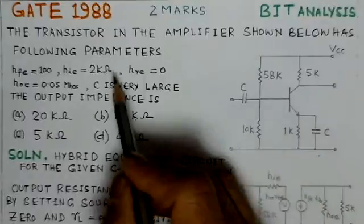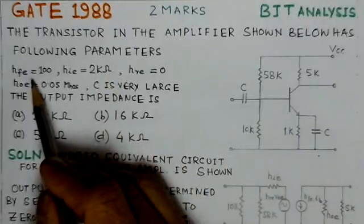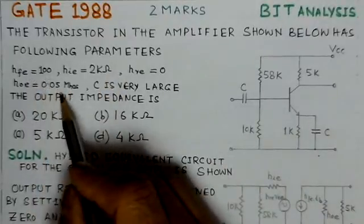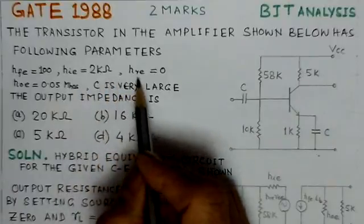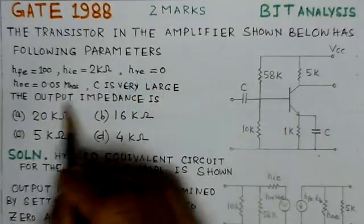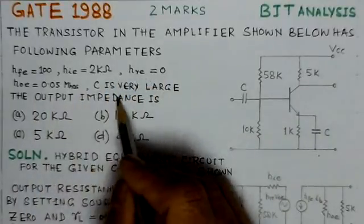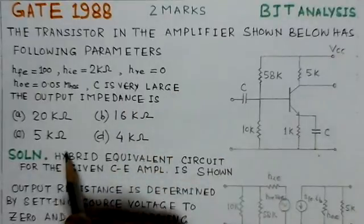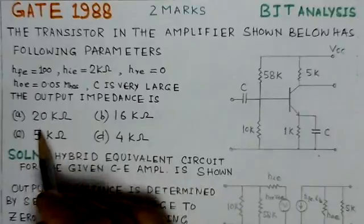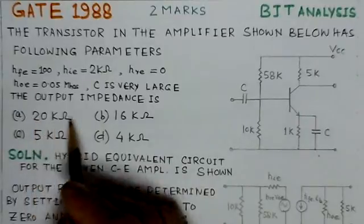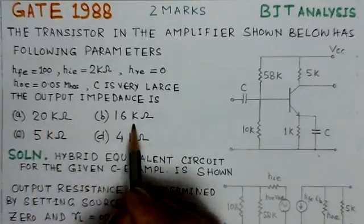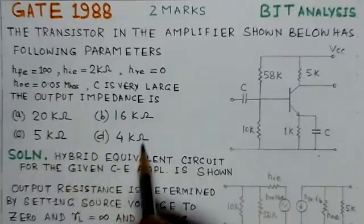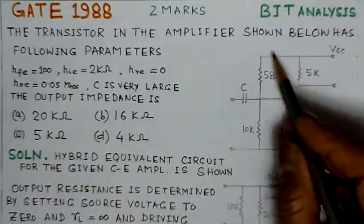HFE is 100, HIE is 2 kilo ohms, HRE is 0, HOE is 0.05 mhos, and C is very large. The capacitance here is very large. The output impedance is - there are four options for output impedance: 20 kilo ohms, 16 kilo ohms, 5 kilo ohms, and 4 kilo ohms.